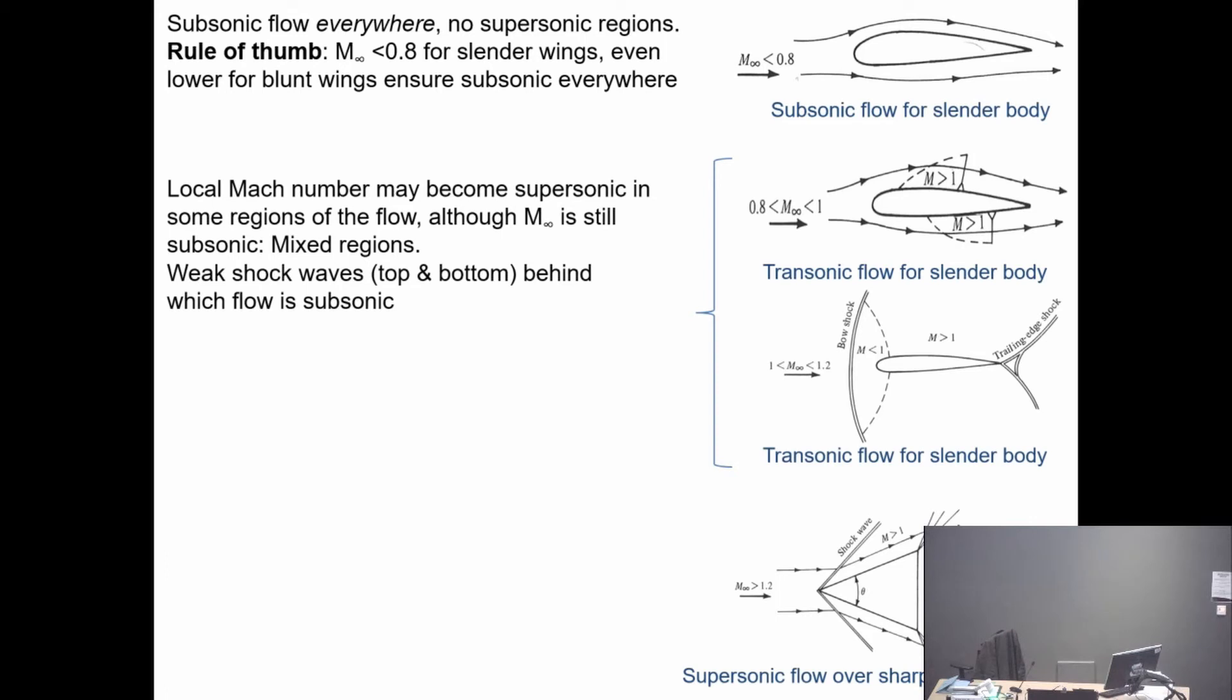If we increase the Mach number, let's say between 0.8 and 1, although the Mach number is less than 1 free stream, around the airfoil it could be completely different. You might get the local Mach number on the top surface greater than 1 - that's supersonic flow locally. You can also get supersonic flow on the lower surface. In both cases, you will have shockwaves. This is a good example of transonic flow.